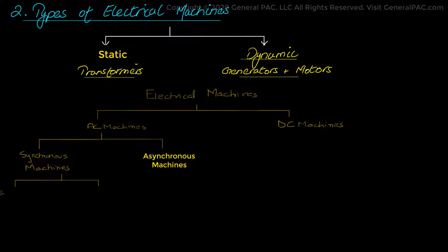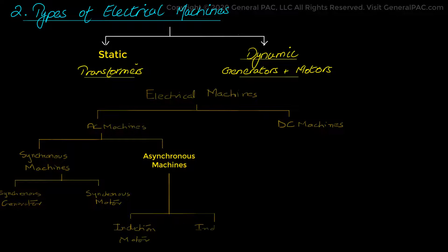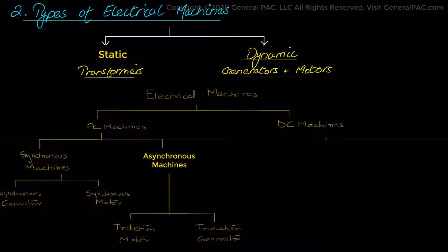In synchronous AC machines, there are synchronous generators and synchronous motors. Then the asynchronous AC machines include induction machines, which can be used as an induction motor and induction generator. Similarly, there are two types of DC machines. There's the DC motors and then there's the DC generators. In the end, they can all be used according to either single-phase and three-phase configurations.